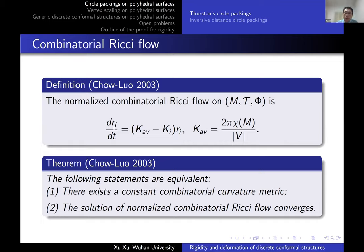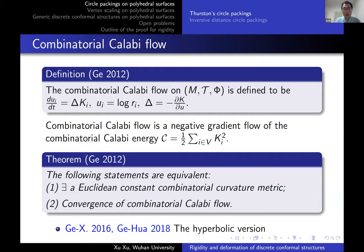They deform the metric according to its combinatorial curvature and prove the equivalence between the existence of a constant combinatorial curvature metric and the convergence of the combinatorial Ricci flow. This provides an effective way to find discrete metrics with prescribed combinatorial curvature.